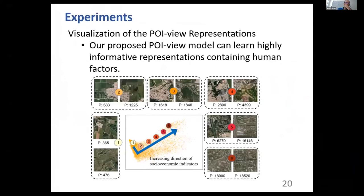We show a case study of our method. We map the POI view representations into a two-dimensional space and visualize how satellite images of different socioeconomic indicators are located in the representation space. We select six anchor points and display the corresponding satellite images. From those satellite images, the development status increases from anchor point 1 to 6. We then use the population data of each satellite image to verify this analysis.